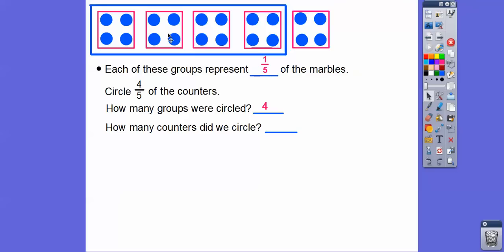So how many counters did we circle? Well, here's four, plus four is eight. I'm counting the counters inside, plus four more is 12, plus four more is 16. So we circled 16 counters right there. So four-fifths of 20, or remember, of means multiply. So four-fifths times 20 is going to be 16.